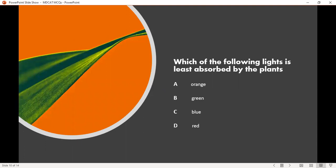Which of the following lights is least absorbed by the plants? Option A orange, option B green, option C blue, and option D red. The correct answer is option B green. Green is not absorbed by the plants, but it is reflected by the plants.